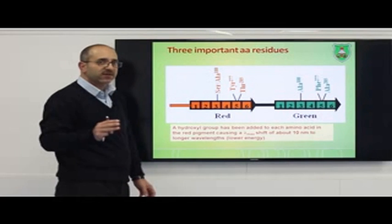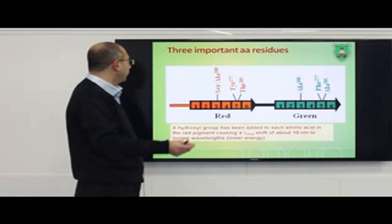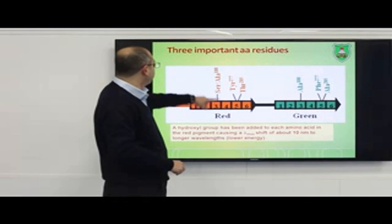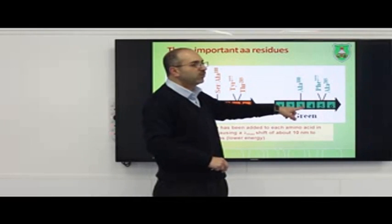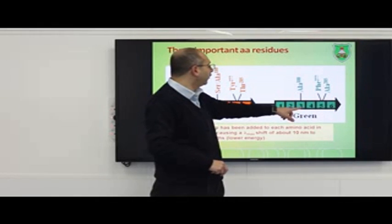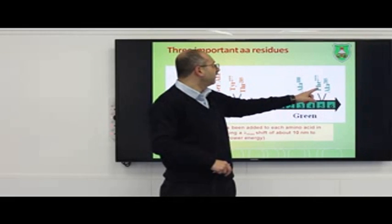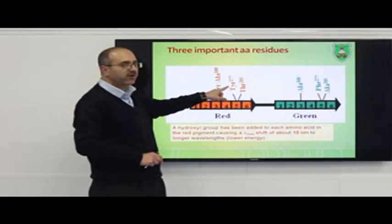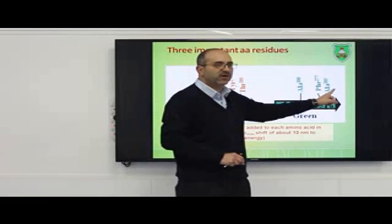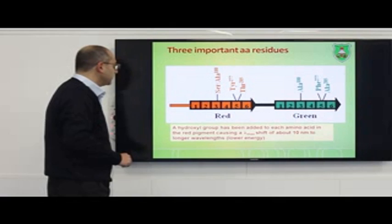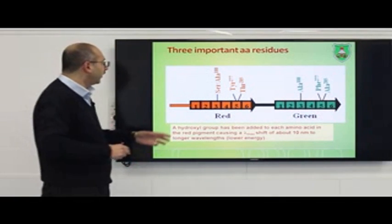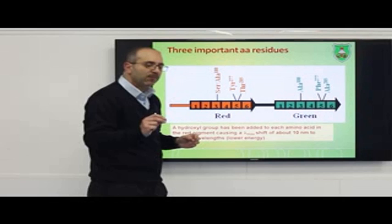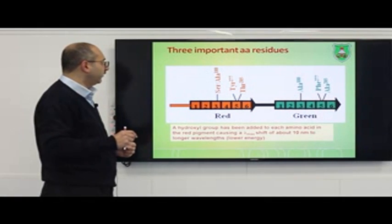Three amino acids differentiate the green and red opsin proteins. The red opsin has serine, tyrosine, and threonine at key positions — amino acids with hydroxyl groups. The green opsin has alanine, phenylalanine, and alanine at the same positions — aliphatic nonpolar amino acids. If a mutation changes serine to alanine, for example, it affects the protein's ability to absorb light in the red wavelength, and vice versa.